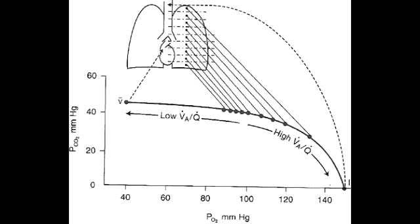Name a condition that would lead to this VQ mismatch approaching infinity. VQ mismatch approaches infinity when you have some sort of blockade in the blood flow to the lung and this happens with pulmonary embolism.